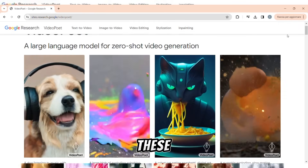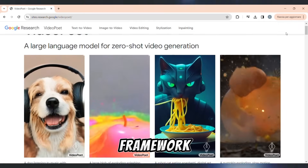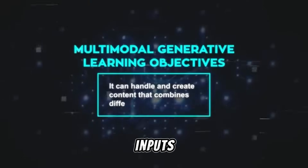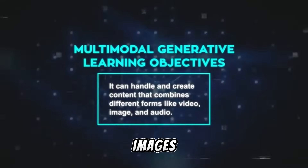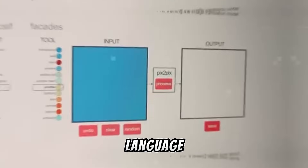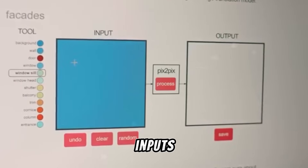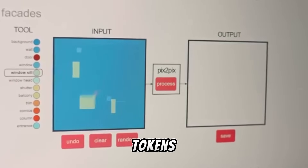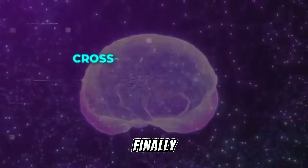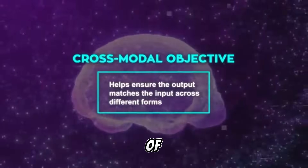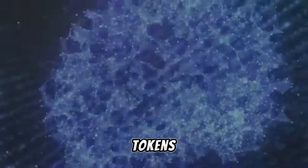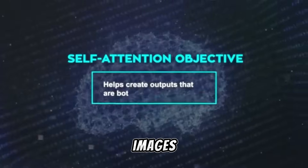By integrating these tokenizers into its framework, VideoPoet has the capacity to transform diverse inputs — such as text, images, or videos — into tokens. Its auto-regressive language model then utilizes these inputs to generate new tokens, forming the basis for creating fresh output. Finally, leveraging the inverse functions of MAGGOT V2 and SoundStream, the tool reconstructs these tokens into videos, images, or audio. This comprehensive process enables VideoPoet to craft dynamic and engaging visual content.